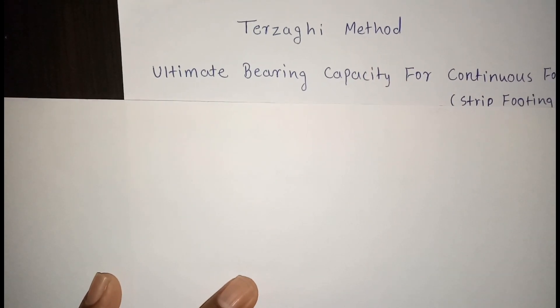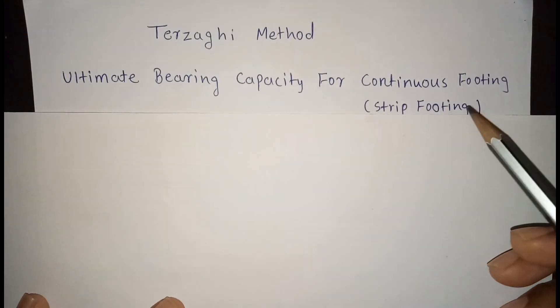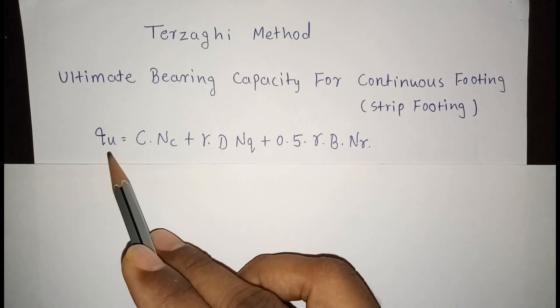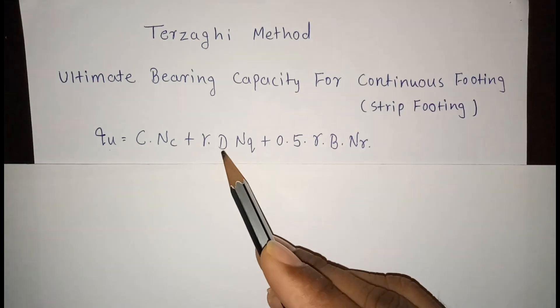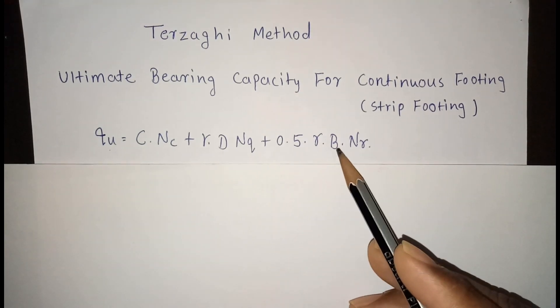Now we will see Terzaghi's method formulas. The first formula gives ultimate bearing capacity for a continuous footing, also known as strip footing. Ultimate bearing capacity QU = CNC + γD·NQ + 0.5γB·Nγ.